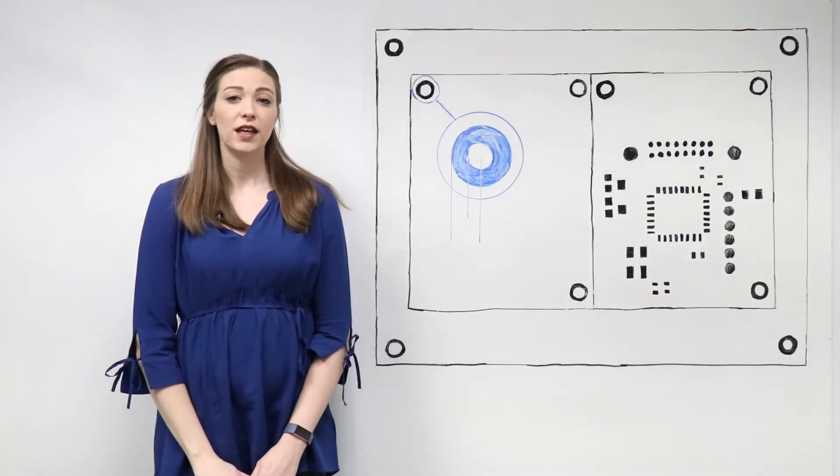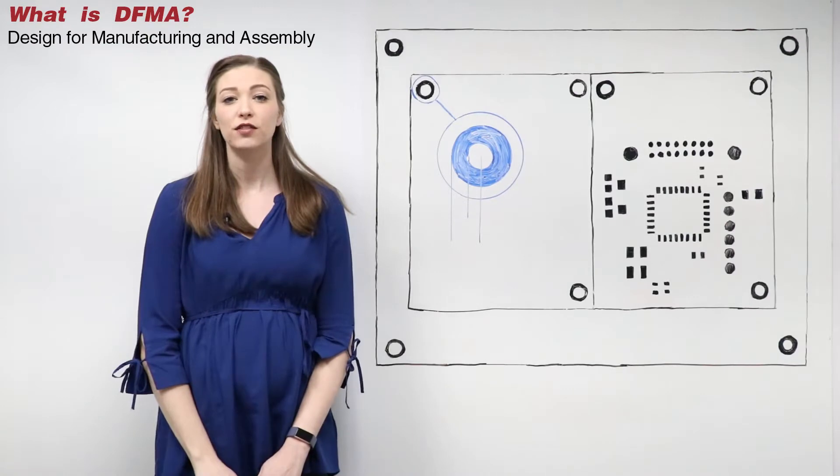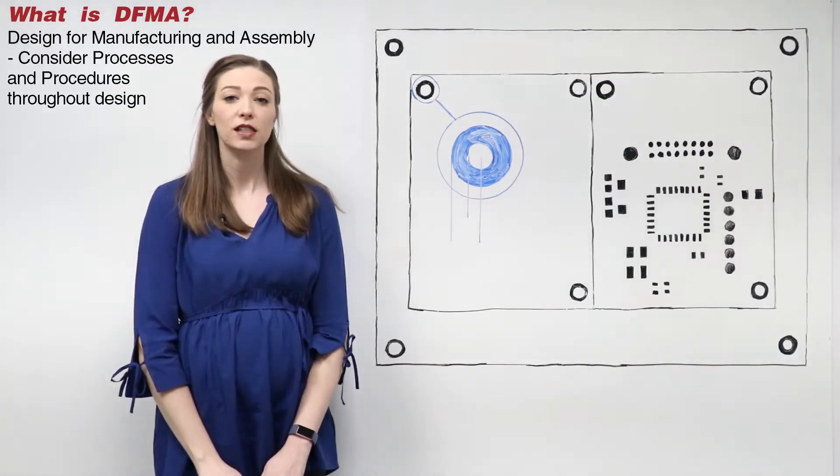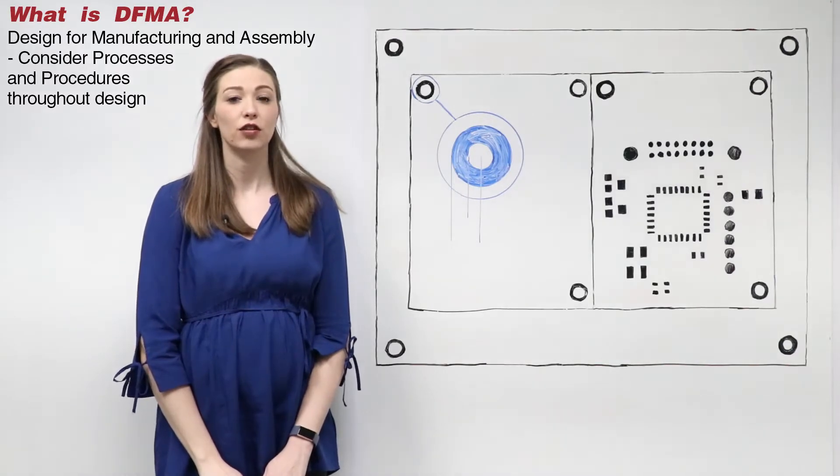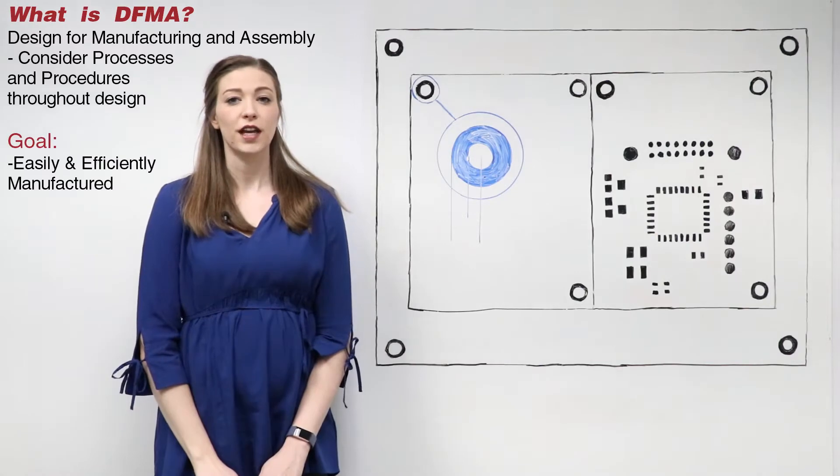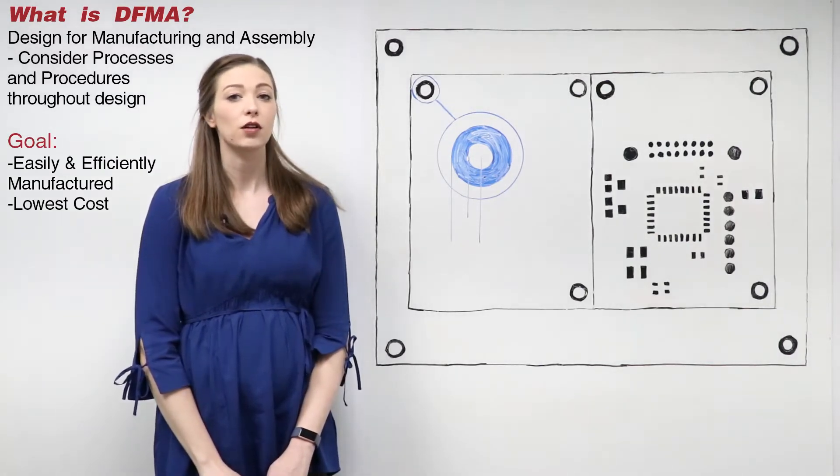You might be thinking, what is DFMA? DFMA stands for Design for Manufacturing and Assembly. Essentially, this means taking manufacturing and assembly processes and procedures into consideration throughout your entire design. The goal of DFMA is to create an easily and efficiently manufactured design at the lowest possible cost.